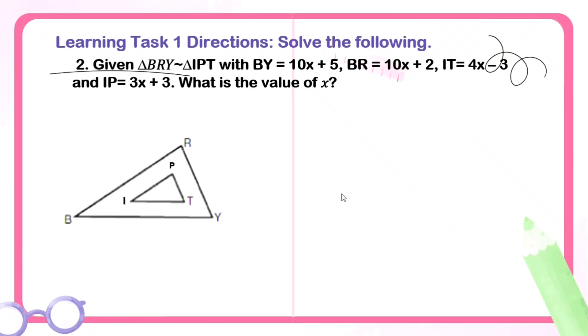How about, same triangle, but these are the given. We have segment BY as 10x plus 5. BR is 10x plus 2, and IT is 4x minus 3, and IP is 3x plus 3. What is the value of x? Here, you'll notice the given measurements of our triangle have x. And what we're looking for is not their measurement, but their x. Let's write down the given. BY is 10x plus 5. BR is 10x plus 2. IT is 4x minus 3. And IP is 3x plus 3.